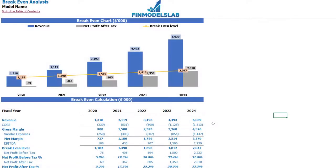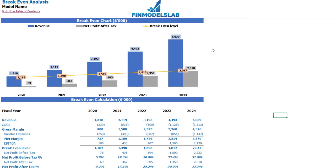On the break-even tab you may find the calculation of the revenue break-even level and the break-even chart. For this particular use case, the revenue break-even level is less than the actual revenue calculation, which means that the company is profitable.